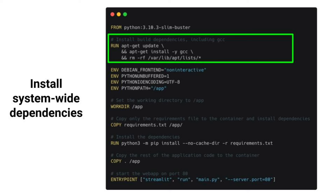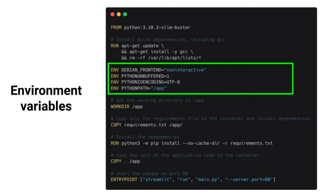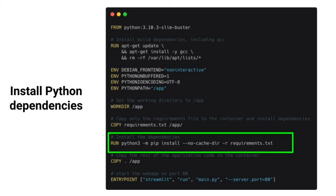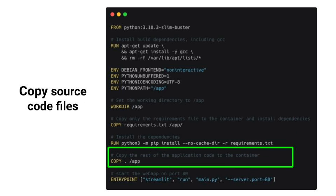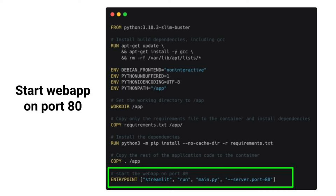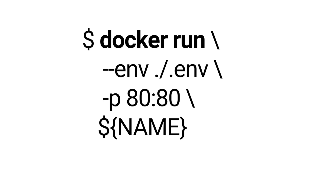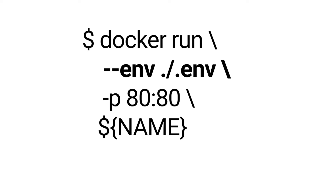The Dockerfile also sets some environment variables that we need, then copies the requirements.txt file, installs the dependencies, copies the rest of the code, and then starts our Streamlit app as the entry point. From this Dockerfile you can create a Docker image using the 'docker build' command, and from that image you can spin up a container using the 'docker run' command.